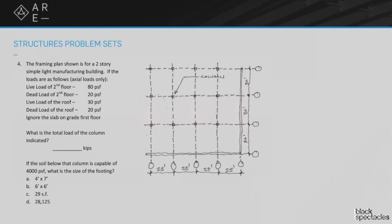Question number four is going to take a little bit of calculation. The framing plan shown is for a two-story simple light manufacturing building. The loads are as follows, axial loads only: live load of the second floor is 80 psf, dead load of the second floor is 20 psf, live load of the roof is 30 psf, dead load of the roof is 20 psf. We're going to ignore that first floor slab on grade because it's being held up by the ground below.